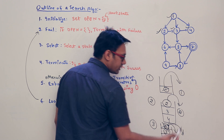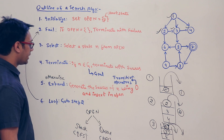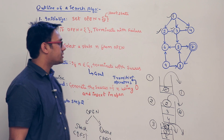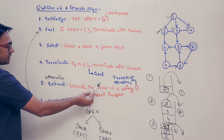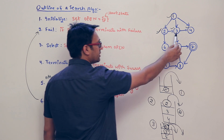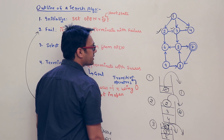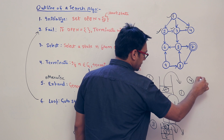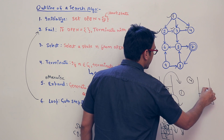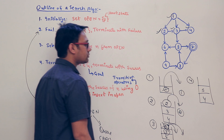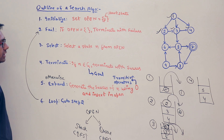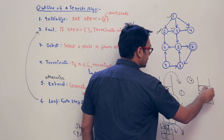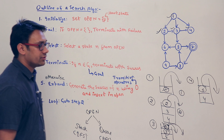We take 3 out of the stack. Is 3 a goal state? No — the goal state is 7. So we expand. The successors of 3 are 4 and 5. Since 4 is already in the stack, we take 5 and put it inside the stack. The stack now contains 4 and 5. We go to step 2 — the stack is not empty — so we select the next state and take 5 out of the stack.